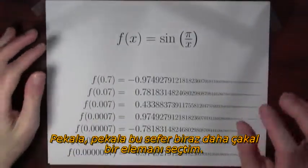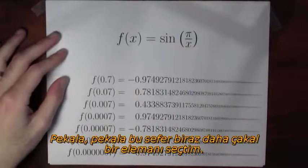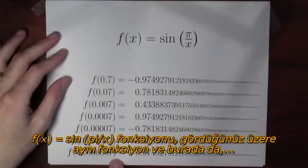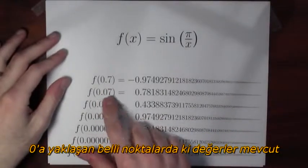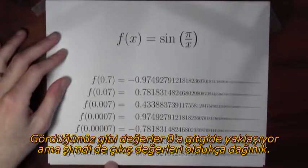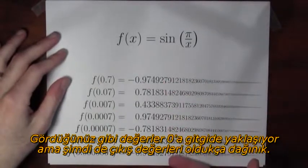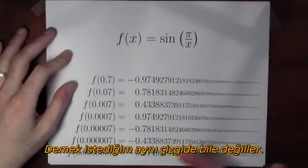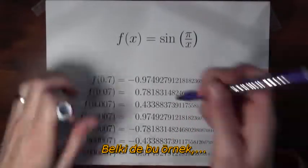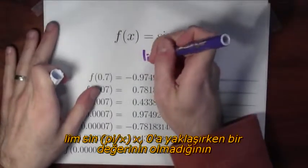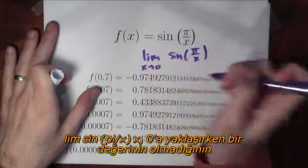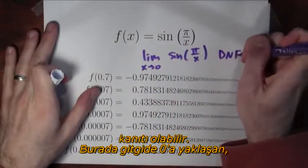Okay, okay, I've been a little bit too tricky in picking my input points. So here's the same function, f(x) = sin(π/x). And here I'm picking a collection of points that's again approaching 0: 0.7, 0.07, 0.007, 0.0007. It's getting closer and closer to 0. But now my output values are looking pretty random. I mean, they're not all the same, for instance. So this is maybe some evidence that the limit of sin(π/x) as x approaches 0 doesn't exist.